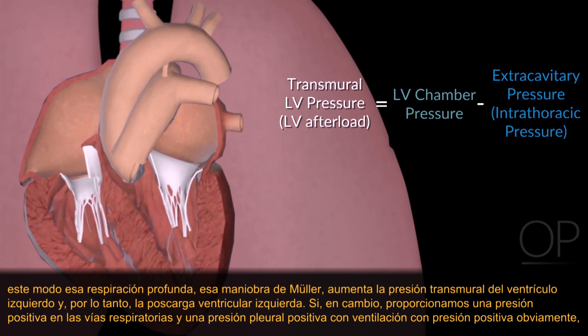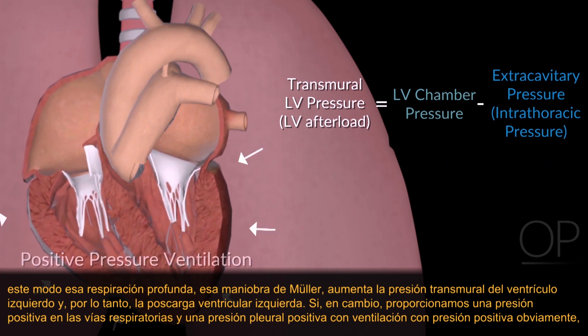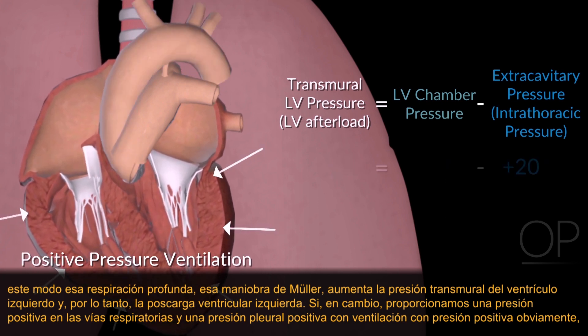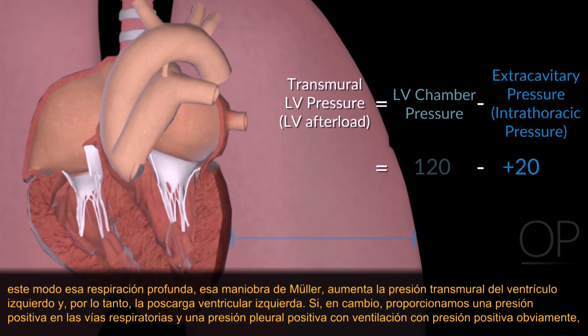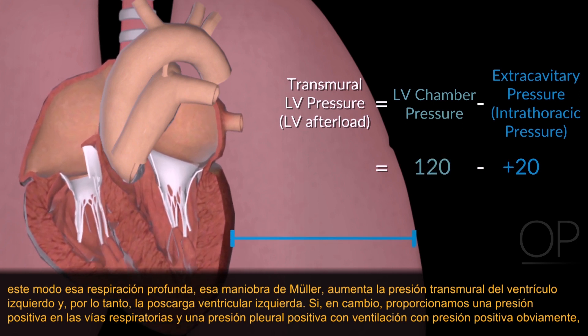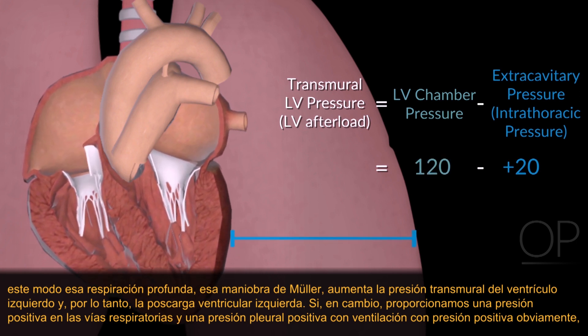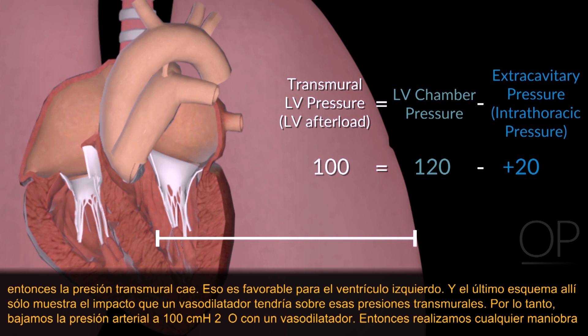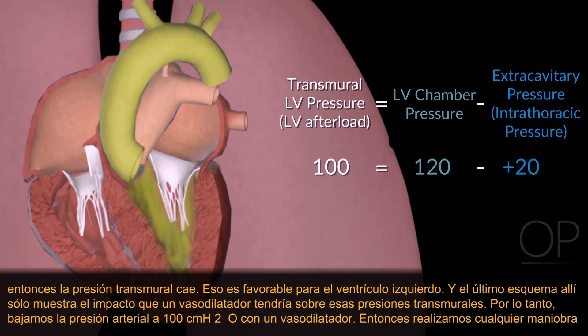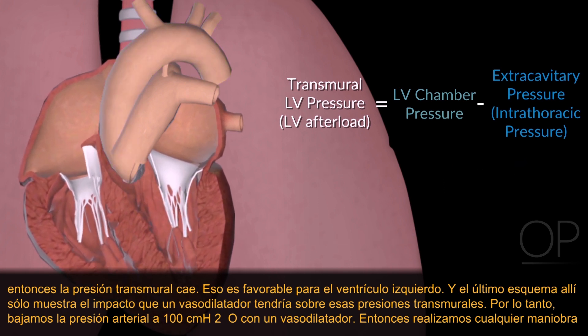If instead we provide a positive airway pressure and a positive pleural pressure — with positive pressure ventilation — then the transmural pressure drops. So that is favorable to the left ventricle.